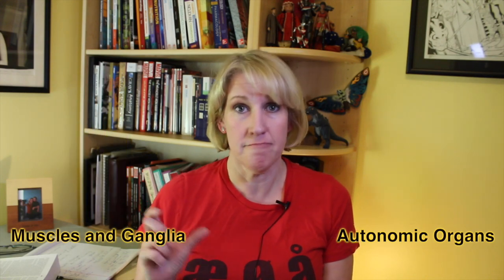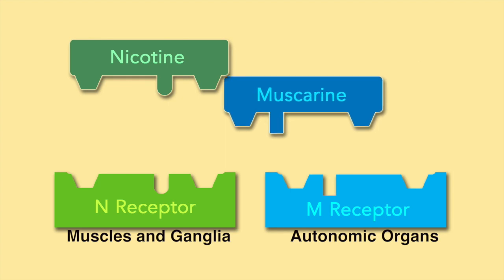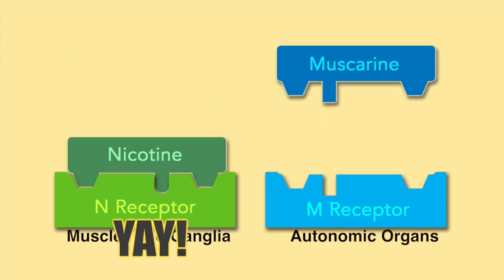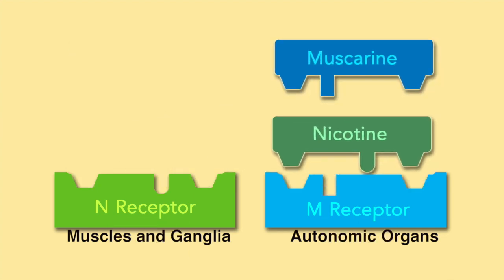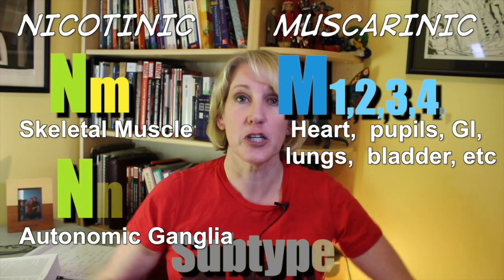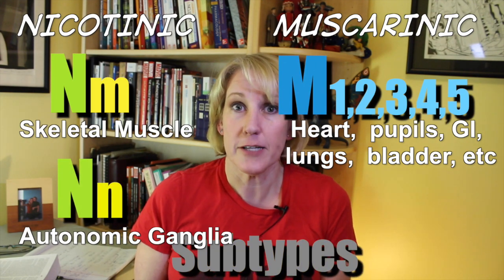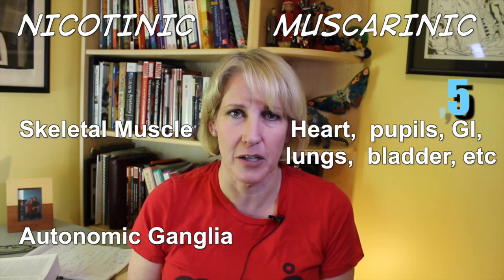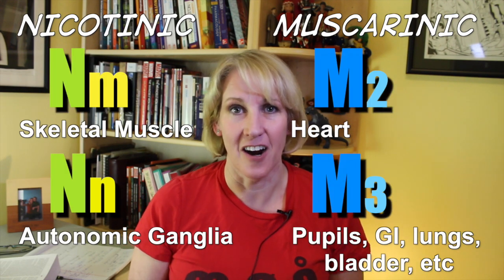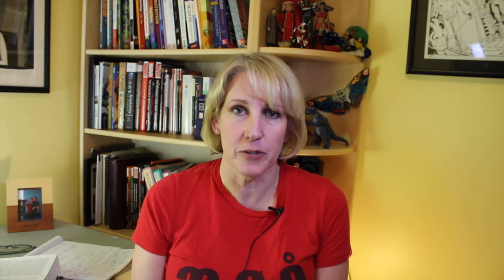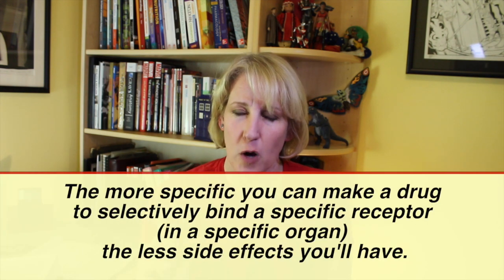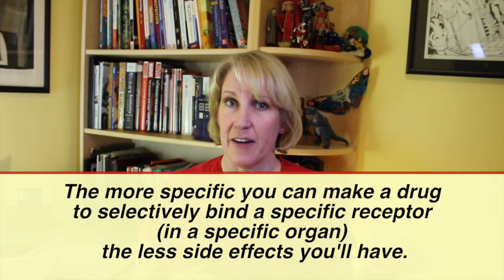Muscarine, which looks like acetylcholine, only affects those organs associated with the parasympathetic nervous system. So we know that the muscarinic receptor is only in those particular organs. That's not even the whole story, because there are actually more subtypes — at least five different subtypes of muscarinic receptor. One subtype is found in the heart, one in other autonomic nervous system organs, and another in the CNS. The more specific you can make a drug to bind a specific receptor, the fewer side effects you're going to have.